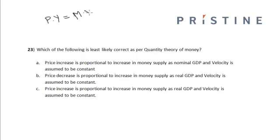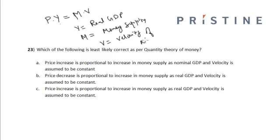So Y is equal to real GDP, M is equal to money supply, V is equal to velocity of money, that is the number of times a particular money is changing hands, and P is the price level.